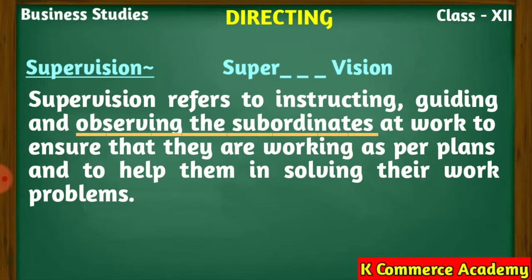Let us start with the meaning of supervision. If we split the word supervision into two parts — 'super' and 'vision' — 'super' means over and above, and 'vision' means to see. So supervision means to see the workers while they are working from over and above. In other words, it means observing the subordinates while they are working, and guiding or instructing them if they are making any mistakes or require guidance. Supervision refers to instructing, guiding, and observing the subordinates at work to ensure they are working as per plans and to help them solve their work problems.